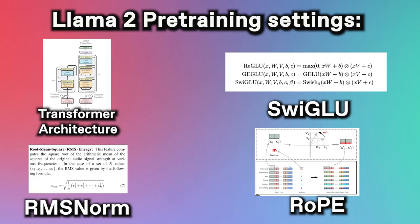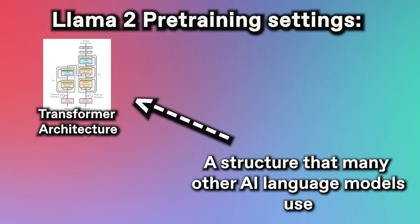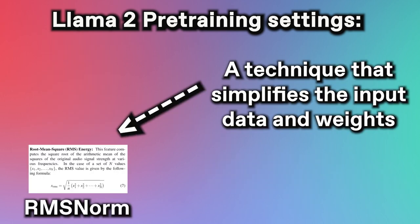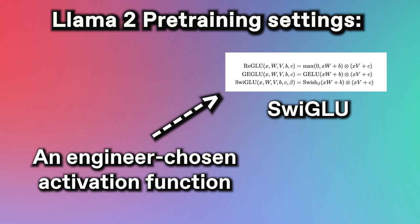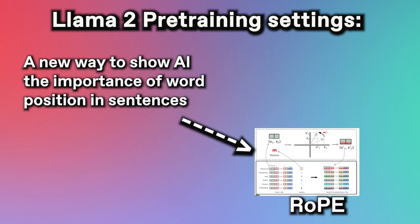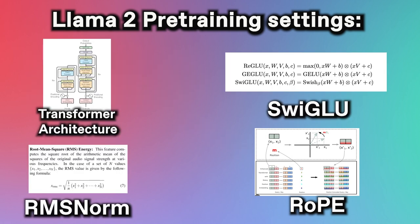So Llama 2's pre-training methods consist of: (1) a classic transformer architecture, (2) a technique that simplifies 2,000 billion tokens into a more digestible form, (3) a specially chosen function that determines whether each neuron should be activated, and (4) a new way to show AI the importance of word positions in sentences.